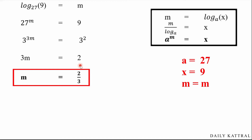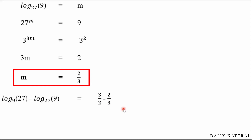Now we subtract: n minus m equals 3/2 minus 2/3. Taking LCM as 6: (3×3 minus 2×2) divided by 6 equals (9 minus 4) divided by 6 equals 5/6. So the answer to the second question is 5/6. By representing each term separately using the format a to the power m equals x, we can easily solve such log problems.